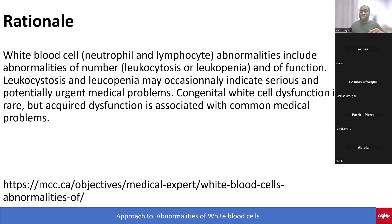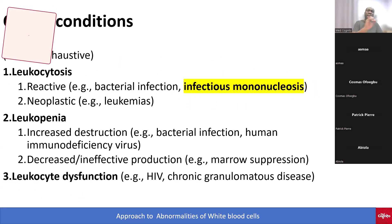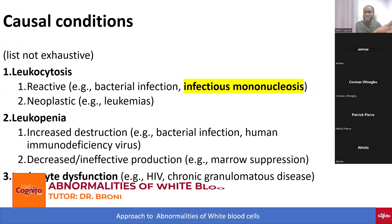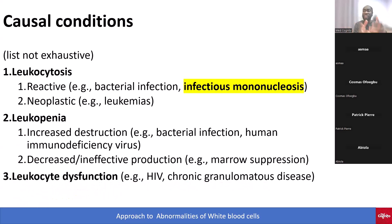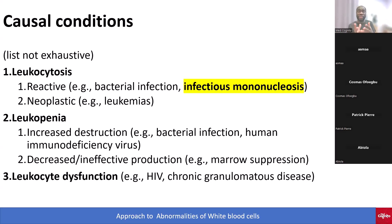This is an introduction to the objective and lists the causal conditions — this is where a lot of people don't engage deeply enough. Use this objective as a study tool to really master the material. With white cell abnormalities you can have leukocytosis or leukopenia. For leukocytosis, think about causes like bacterial infection — the patient might have pneumonia, cellulitis, or other infections.